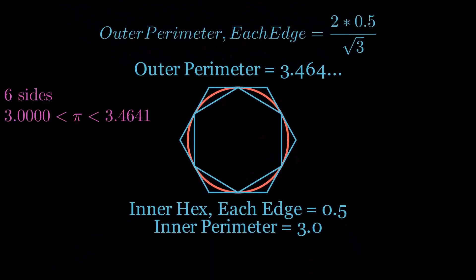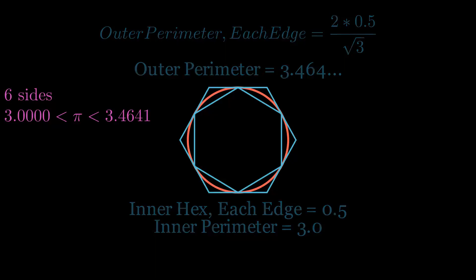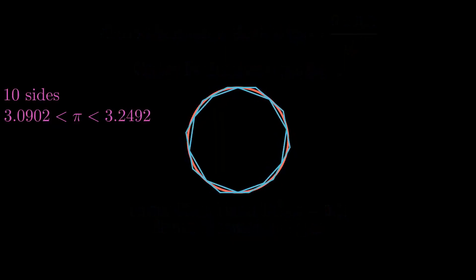We still don't know exactly what the value of pi is, but we have it trapped between these two perimeters and we have a way of narrowing the gap. Now we could just keep increasing the number of sides to get a more and more accurate answer for pi.